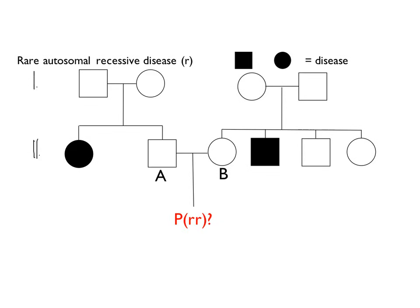Now we're going to apply what we just went over to calculating probabilities of inheritance in human pedigrees. Here is an example of a human pedigree looking at the inheritance of a rare autosomal disease, denoted with little r. This is a recessive disease, and individuals in this pedigree that have the disease are colored in black. To calculate probabilities, we need to assign as many genotypes as we can. The question is: what is the probability that individual A and individual B, if they mate, will have a child with the disease? All individuals that have the disease must be homozygous recessive (rr).